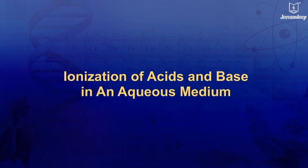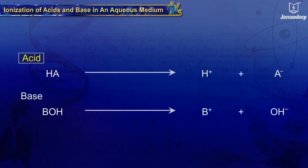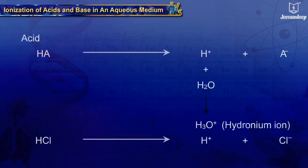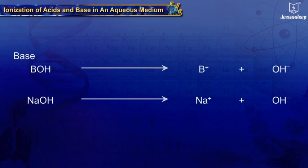Ionization of acids and base in an aqueous medium. Acids and bases ionize, that is, dissociate into ions in an aqueous medium. Acids generate H+, that is, hydrogen ions, which combine with water and form hydronium ion, H3O+. Bases generate OH-, that is, hydroxyl ions.